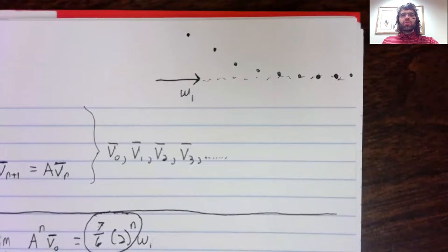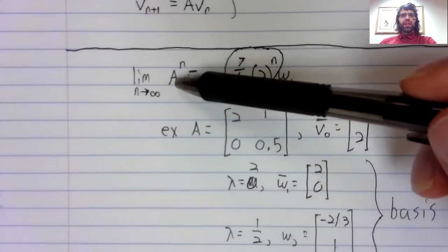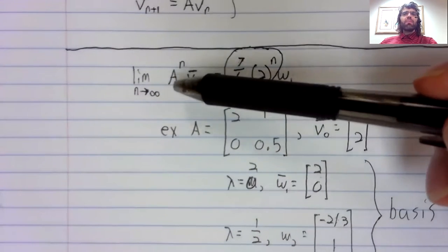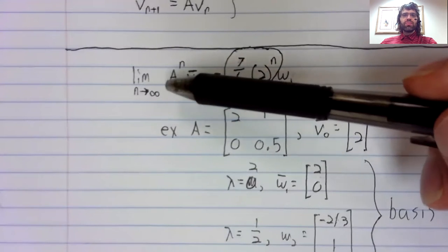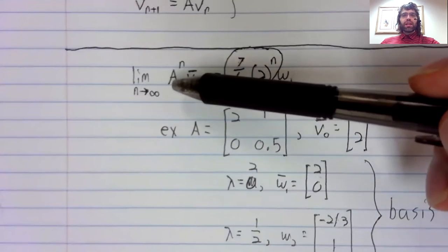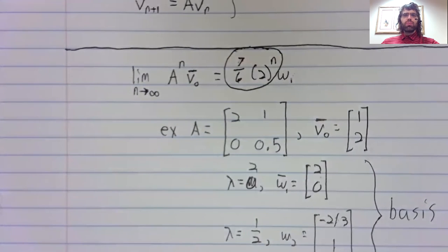Our next goal is to ask what happens if this matrix A has complex eigenvalues. But for that, we're going to have to do some serious groundwork.